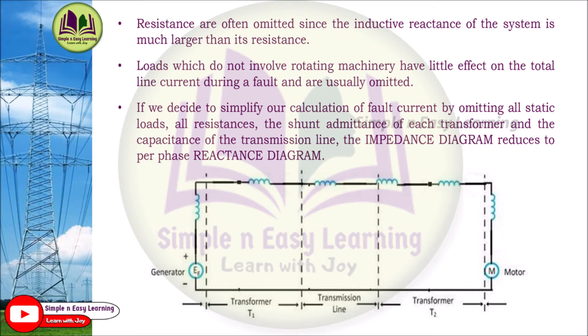Loads not involving rotating machinery — meaning static loads other than motors — can be omitted. A motor is a rotating load and cannot be omitted, but static loads without rotating machinery can be. To simplify fault current calculations, we omit four things: all static loads, all resistance, the shunt admittance of each transformer, and the capacitance of the transmission line. With these omissions, the impedance diagram reduces to a per-phase reactance diagram.